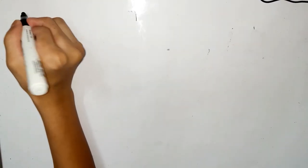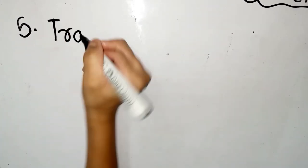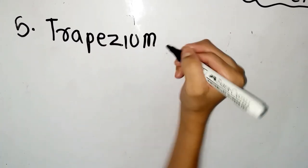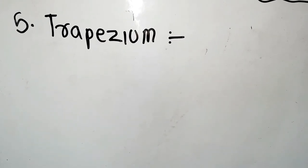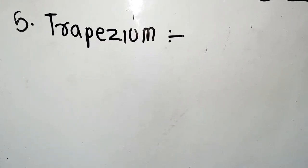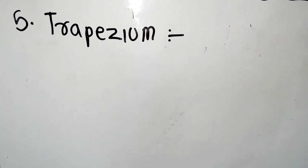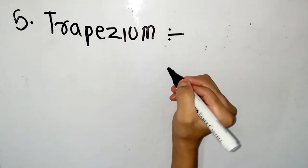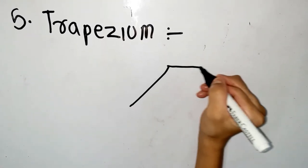Now, trapezium. A trapezium is a flat shape with four straight sides — one pair of opposite sides being parallel and the other pair not parallel. This is the figure of a trapezium.